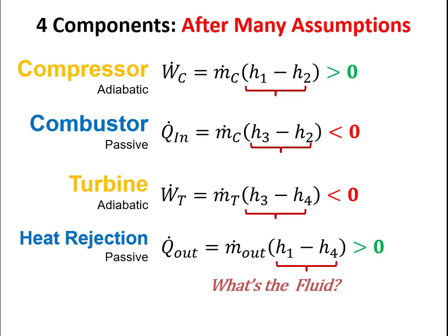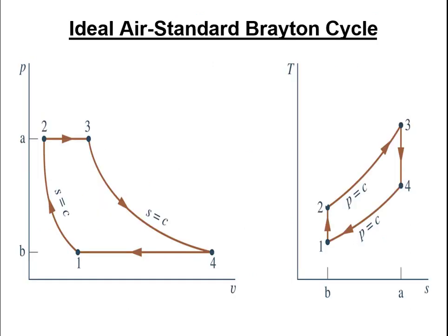Up until this point the symbolic solutions look like a Rankine cycle problem. But it changes when we ask what the fluid is, because the working fluid here is air. Before we go further, let's look at what the PV and TS diagrams for Brayton cycles look like.